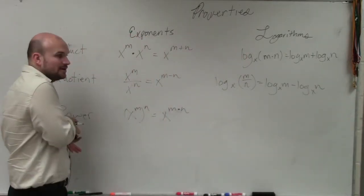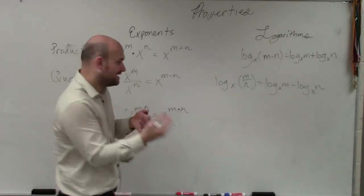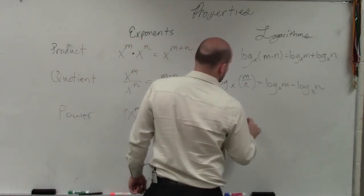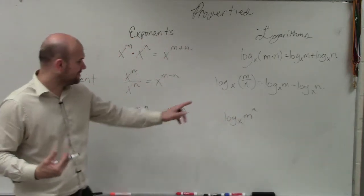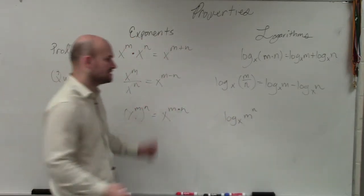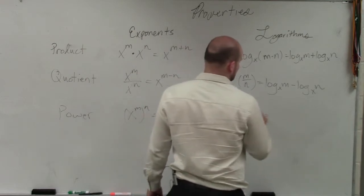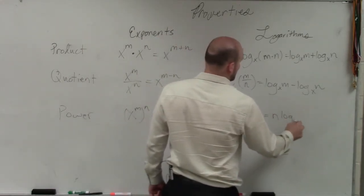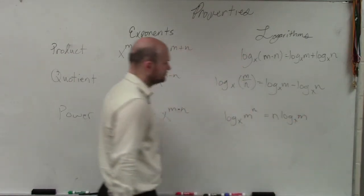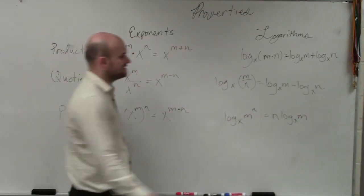And then the last one would be the power rule, which is, again, kind of the same thing. If I have log base x of m raised to the n power, then I can rewrite that as the product, which would look like this. So I basically bring the n down in front, and I multiply it by the log base x of m. And that is multiplying.